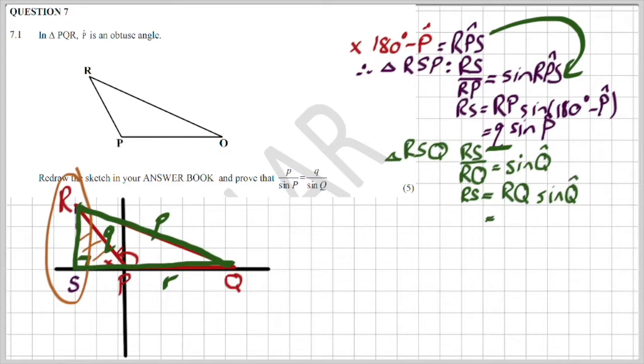And solving for RS, this is going to give me that RS is also P sin of Q. Remember, it was Q sin of P not that long ago. So those two expressions have to be equal to one another because they both represent RS.